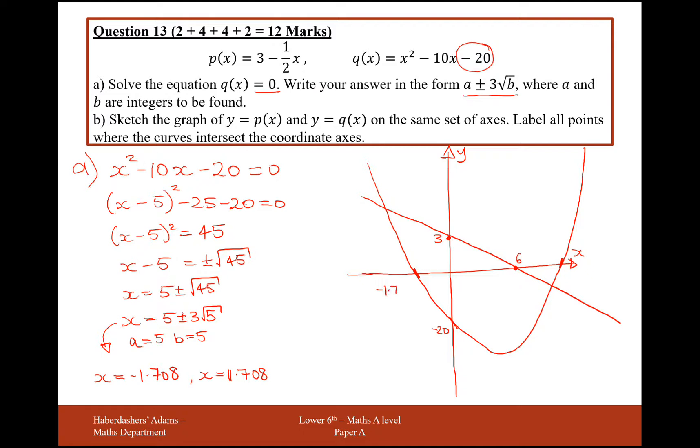So minus 1.708 is that coordinate there. Let's make sure we write all of these as coordinates just in case. Minus 1.780 and this one over here is going to be 11.708. Zero as a coordinate.